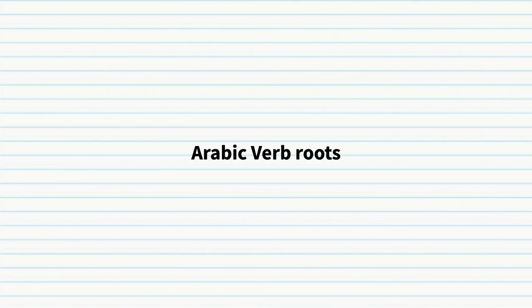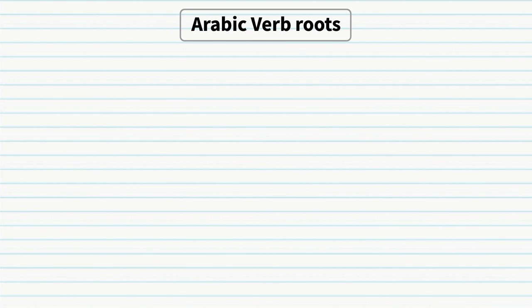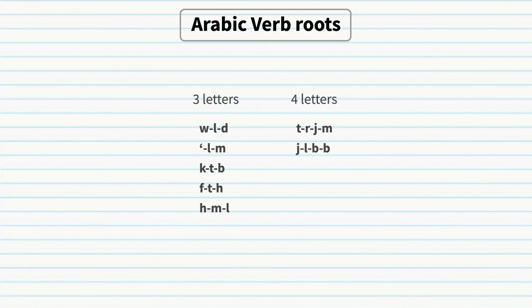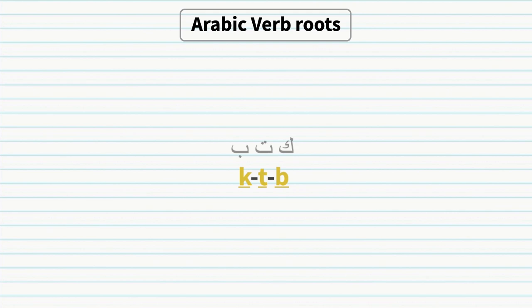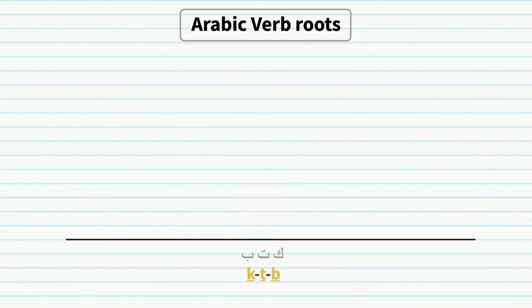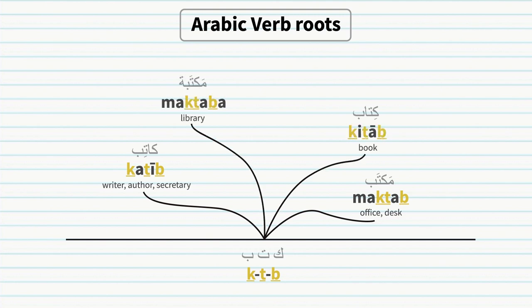Arabic verb roots: just like other Semitic languages, most Arabic words are derived from a three-letter root. Arabic verb roots can have two, three, or four letters, but almost 90% of used verbs are three-letter roots. For example, the root كتب (k-t-b) relates generally to anything about writing or books — from it are derived many words including 'kitab' (book), 'maktab' (office/desk), 'katib' (writer), and many more. Learning Arabic roots is so important because from one root you can derive dozens of words. Think of a root as a tree seed — many branches grow from it, but they are all part of the same tree.